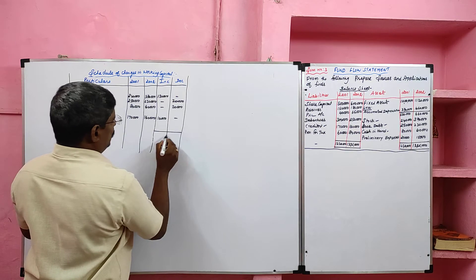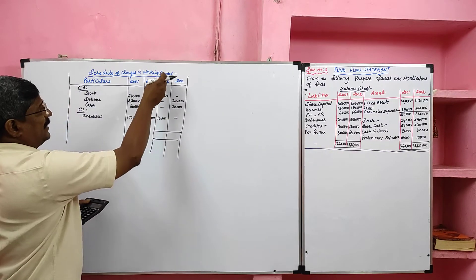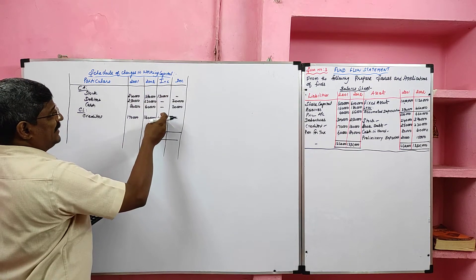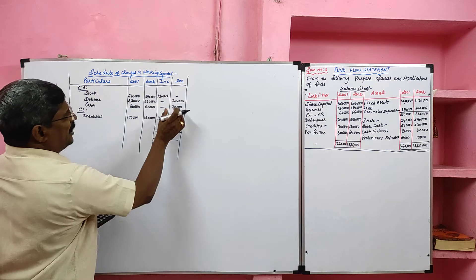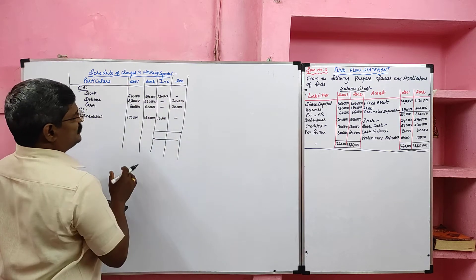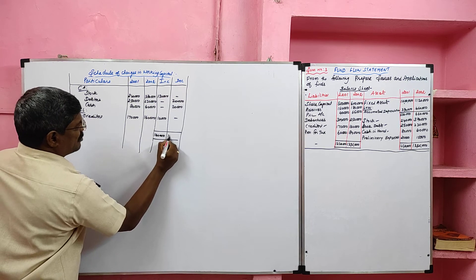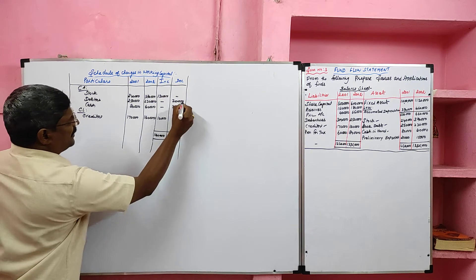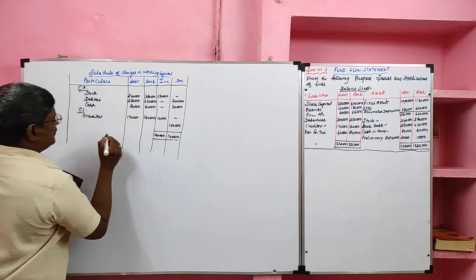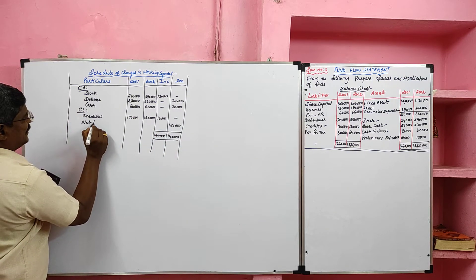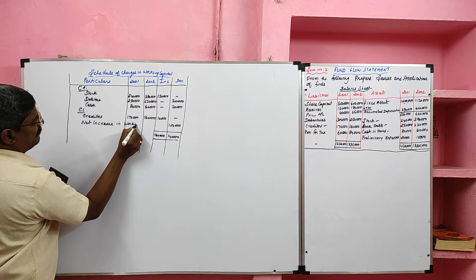There are no other current assets or current liabilities. Now finding the net increase or decrease in working capital: gross increase total is 1,40,000 and gross decrease total is 40,000. Increase is higher, so 1,40,000 is recorded on both sides. Then 1,40,000 minus gross decrease 40,000 gives us 1,00,000. This is called net increase in working capital.